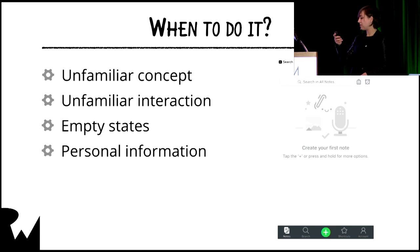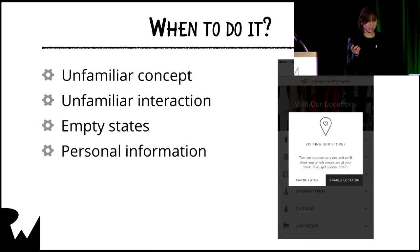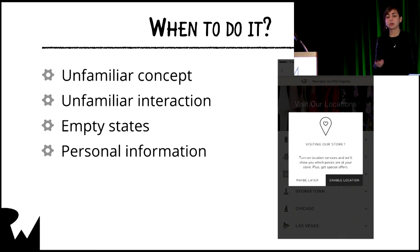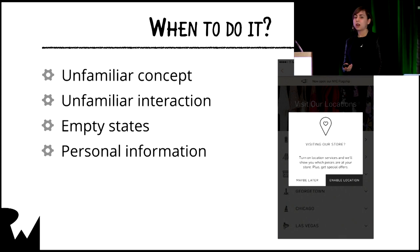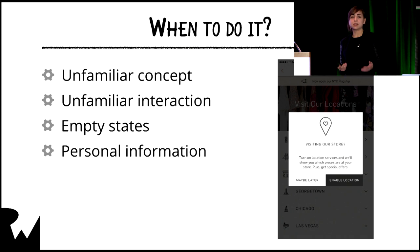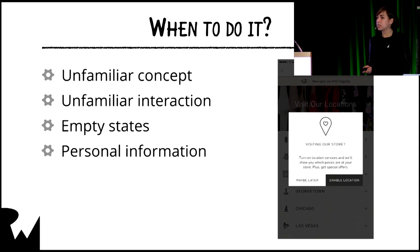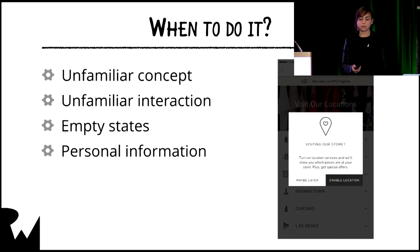Rent a Runway, for example, waits until the user gets to the stores page before asking for location permissions. And even so, they first give the user an interstitial so they can select to dismiss the permission request before it actually happens.